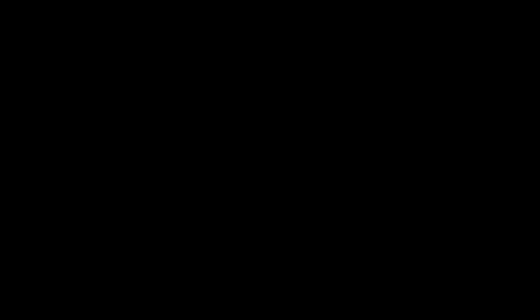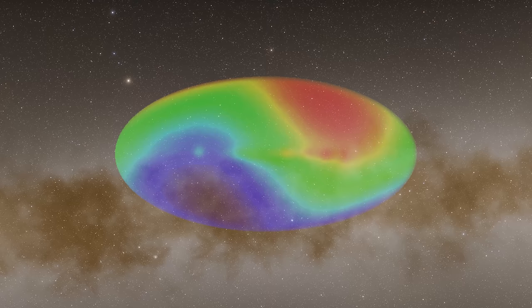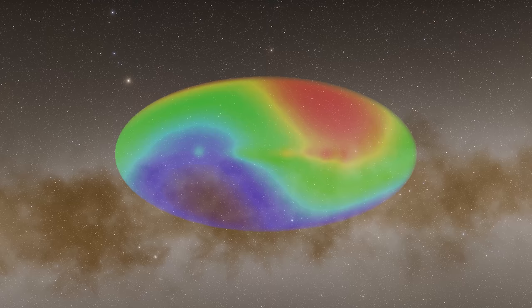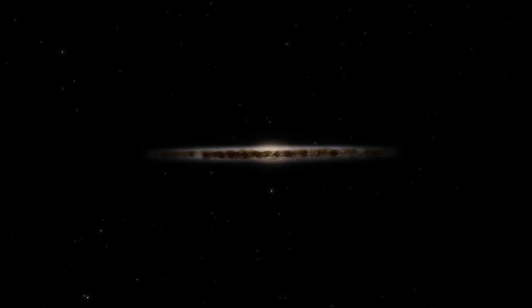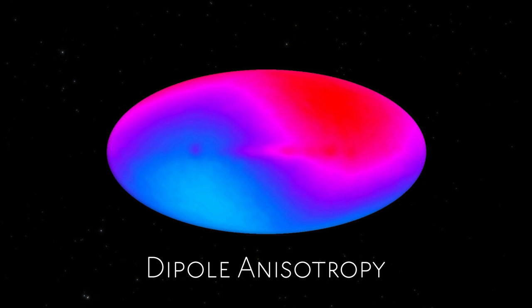The first and largest anisotropy we found was a temperature change of around 0.008 Kelvin. On this scale, the microwave sky appears to resemble a yin-yang symbol. However, this is not a result of the Big Bang, but rather a result of the Sun and the Milky Way galaxy moving through space towards a series of galaxy clusters known as the Great Attractor. This creates a temperature gradient in the microwave sky from one side to the other, known as the Dipole anisotropy.